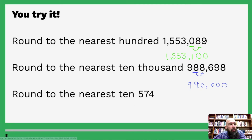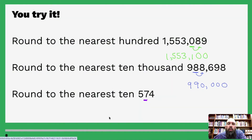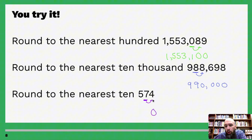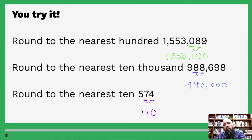Last one — round to the nearest ten. Five or above, give it a shove? No — four or below, let it go! So four becomes zero, and since four is four or below we leave seven as seven, and then five comes along for the ride.